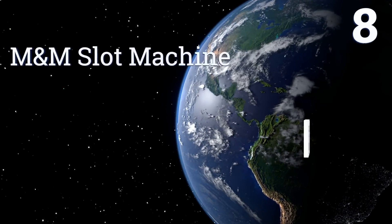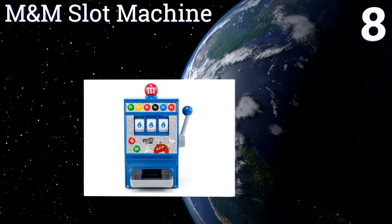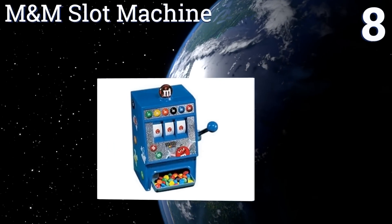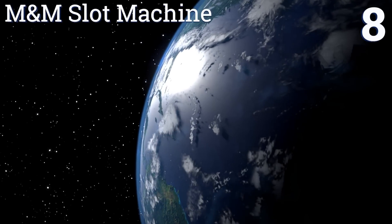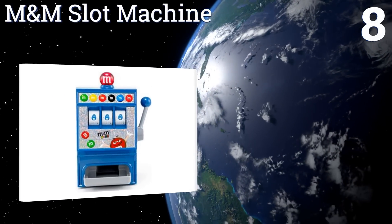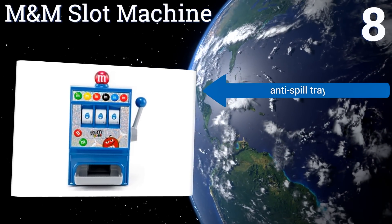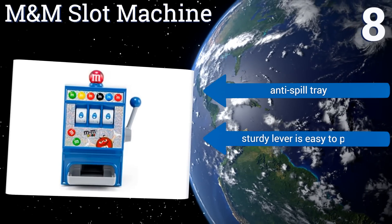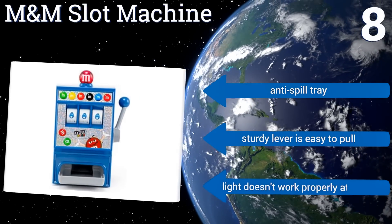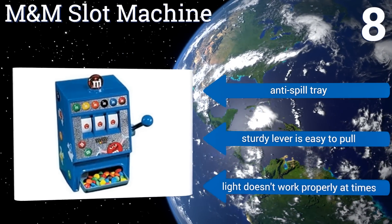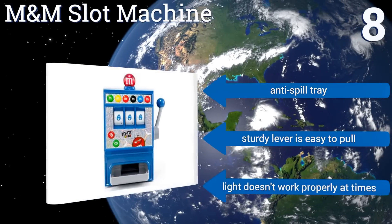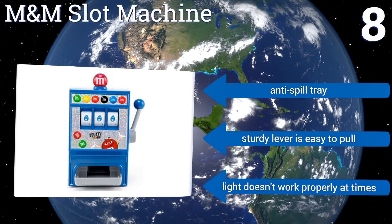Coming in at number 8 on our list. You can get your Vegas and chocolate fix simultaneously with the adorable M&M slot machine. This collectible item is great for fans of the popular candy and makes every spin a winner but the sound is loud and can get a bit annoying after a little while. It comes with an anti-spill tray and a sturdy lever that's easy to pull. However, the light doesn't work properly at times.